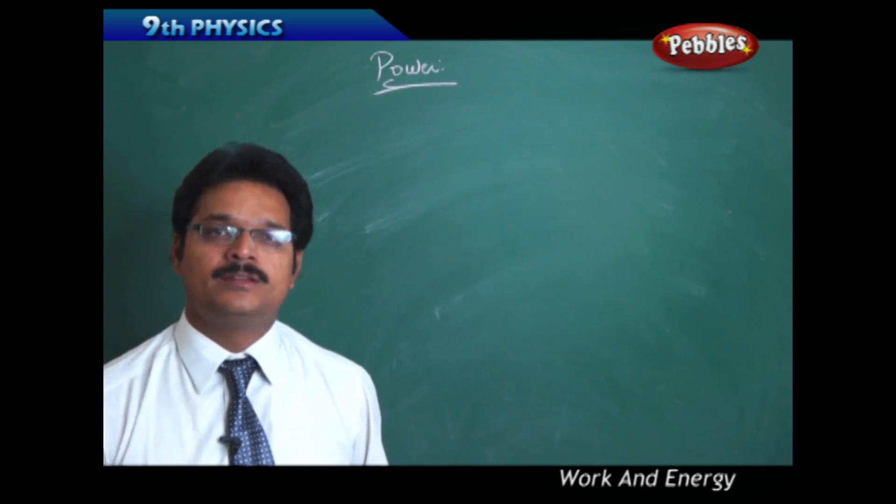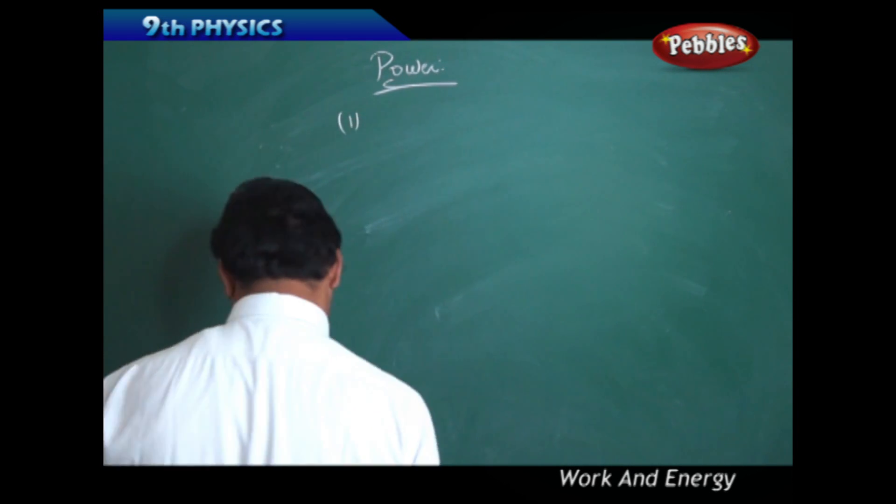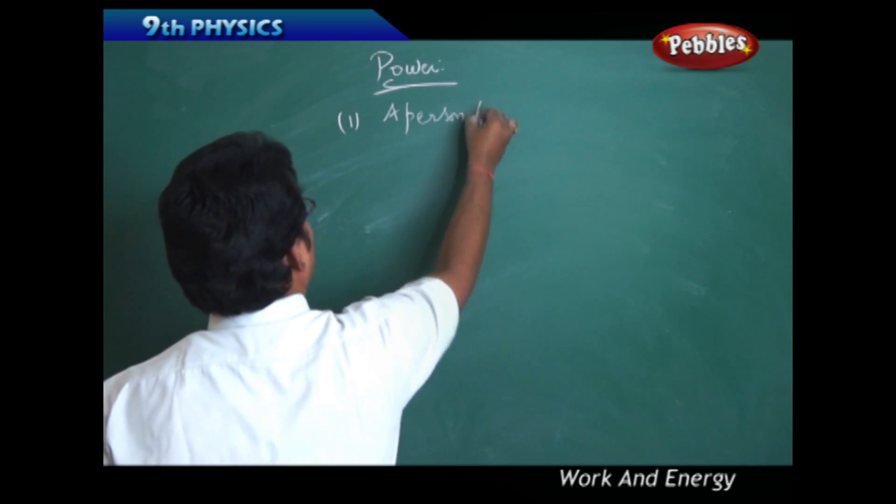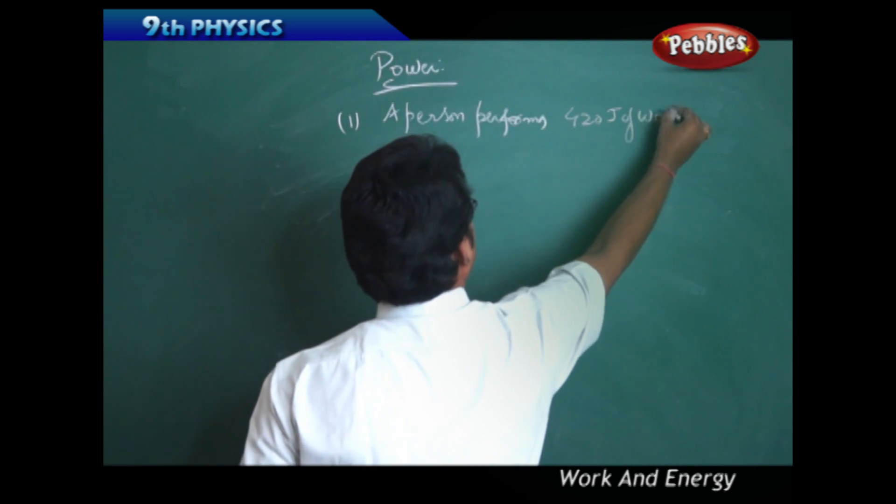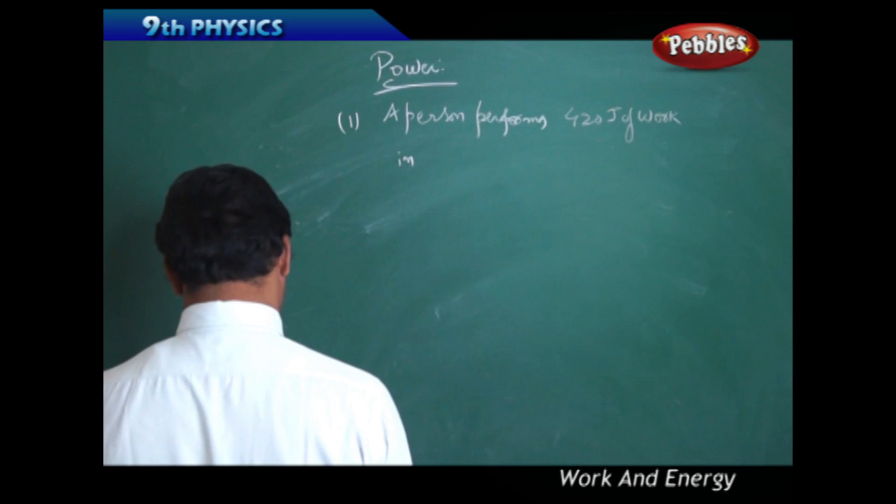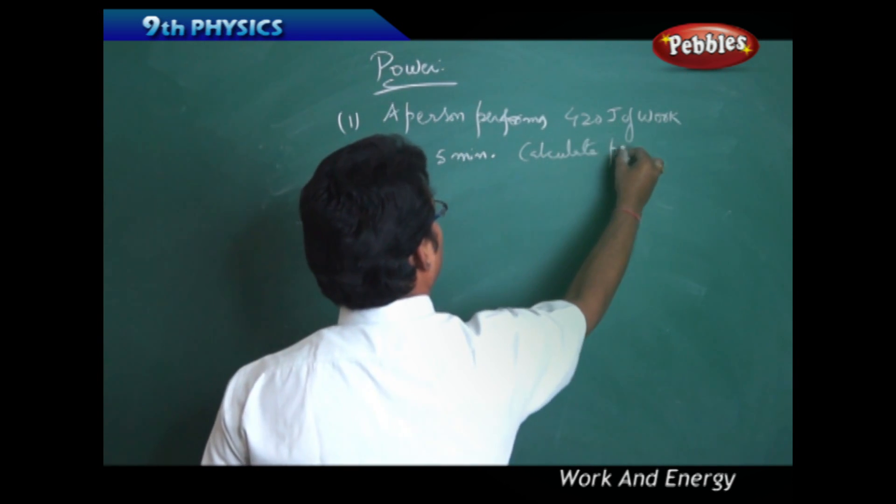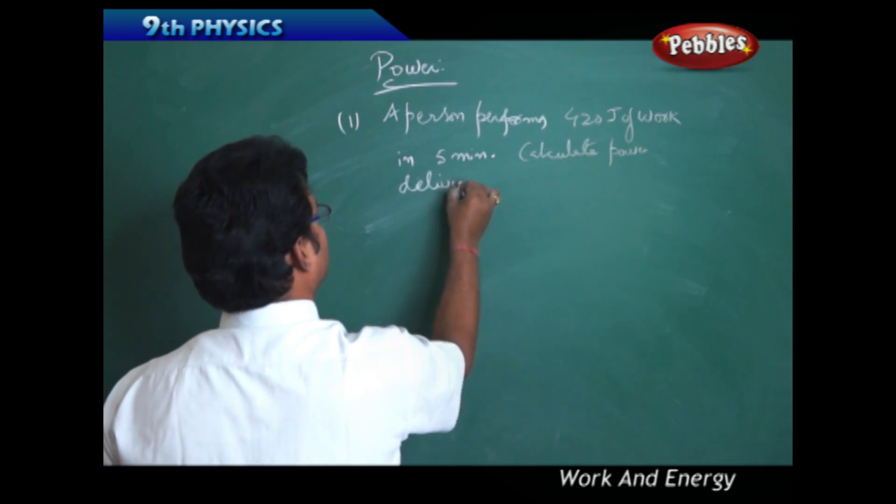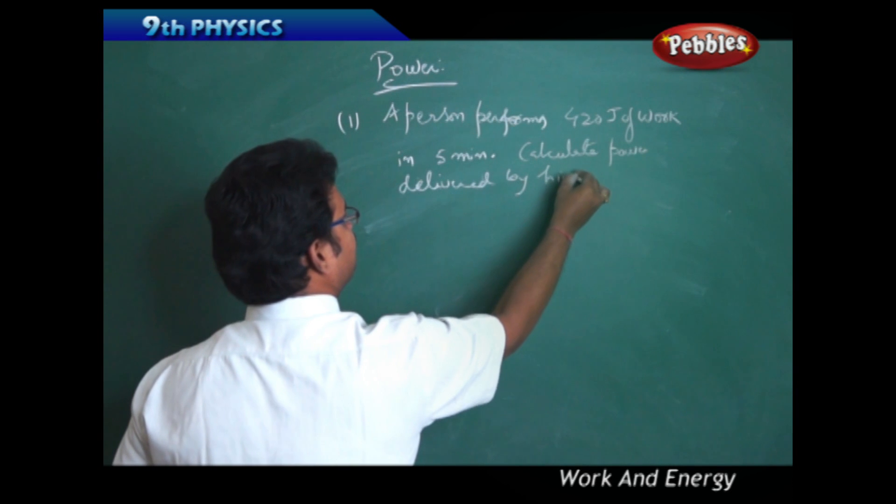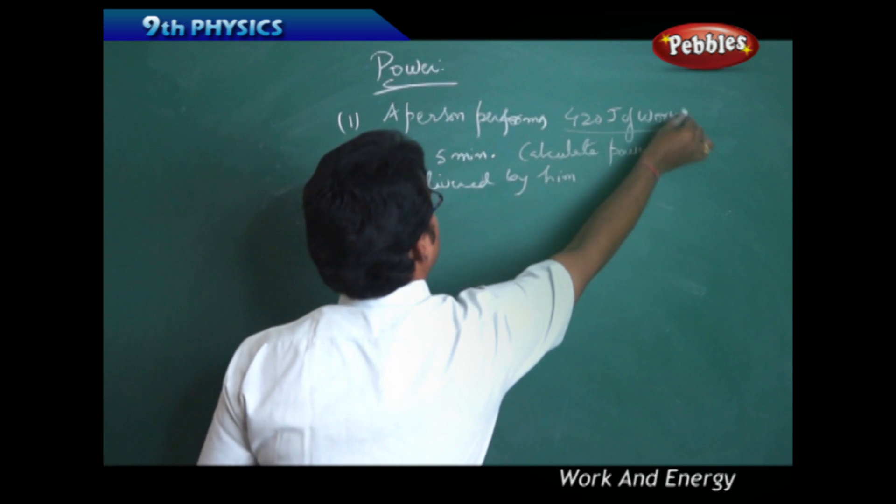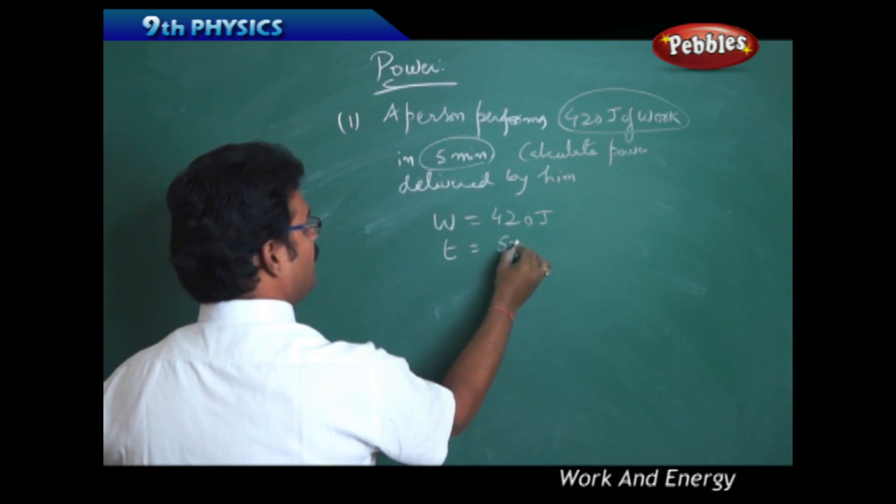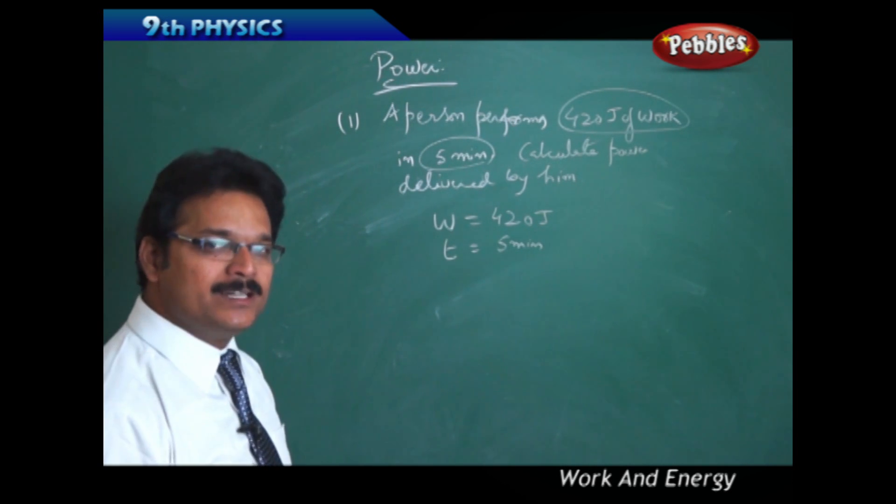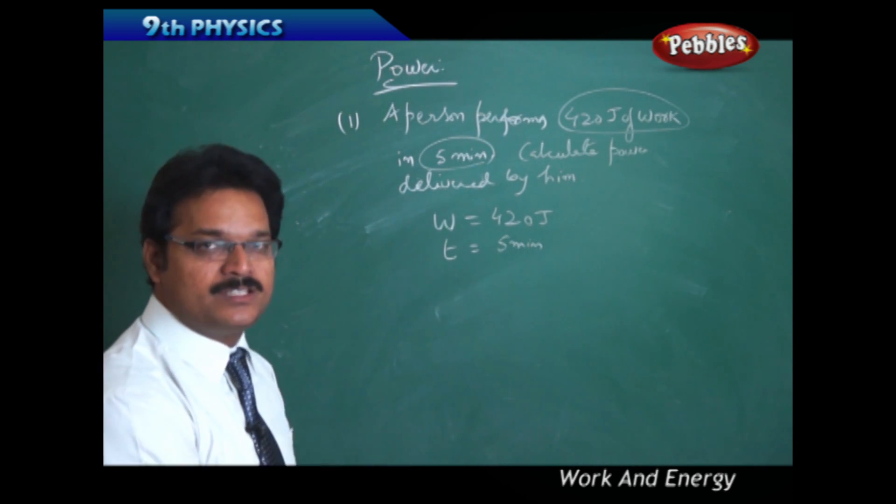Numerical problem 1: A person performs 420 joules of work in 5 minutes. Calculate power delivered by him. Given: work W = 420 joules, time t = 5 minutes. Remember, always convert time into seconds in physics. 5 minutes = 5 × 60 = 300 seconds. Using the power formula P = W/T.